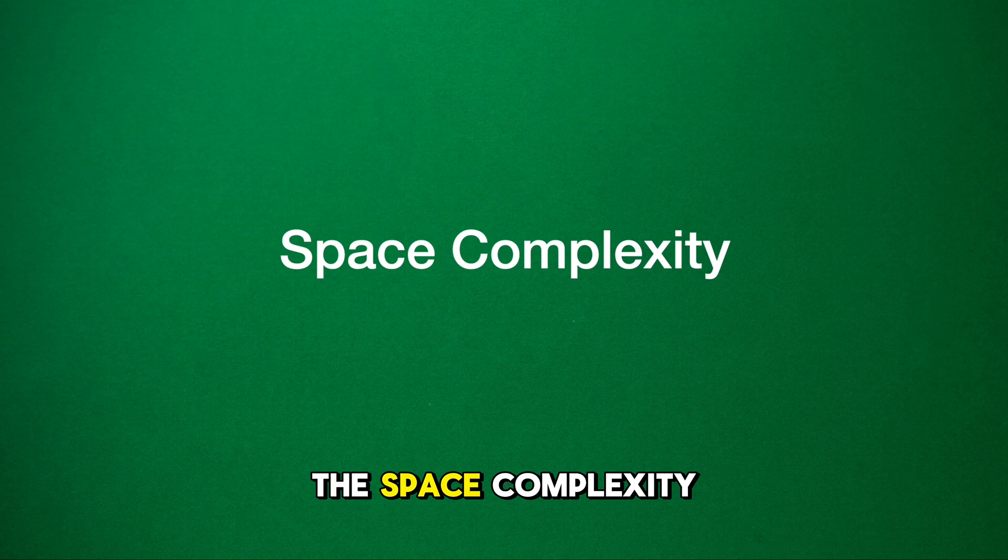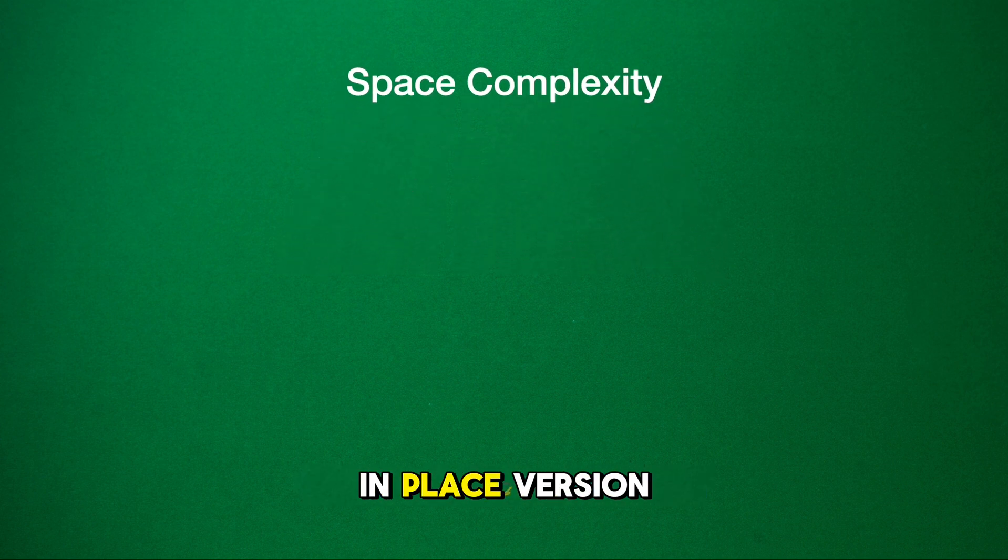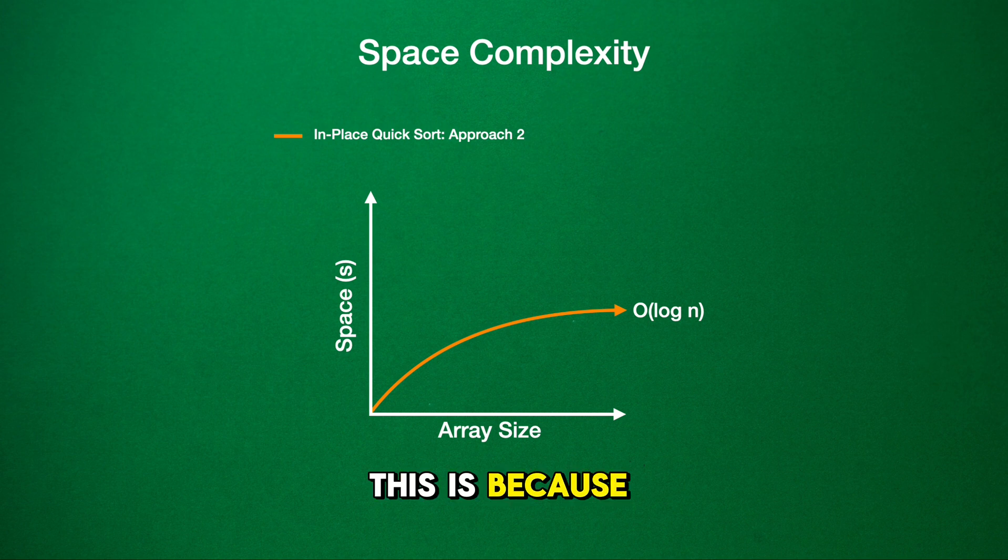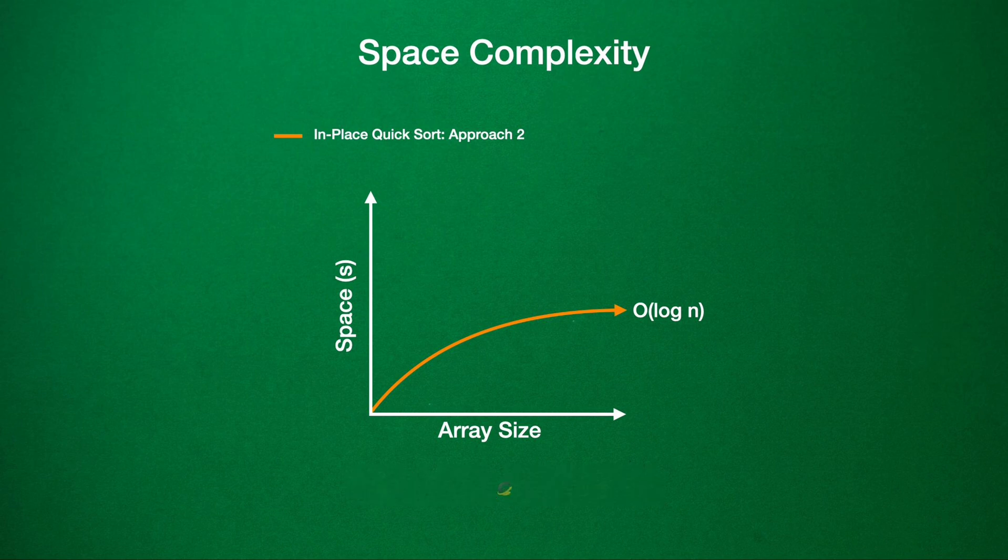In quick sort, the space complexity can vary significantly depending on whether you're using an in-place version or a non-in-place version. The space complexity for the in-place version of quick sort is O(log n). This is because the algorithm sorts the array by recursively partitioning it into smaller sections. The space needed is for the stack frames due to recursion. And since the deepest level of recursion is proportional to the number of times we can halve the array, it results in a logarithmic space requirement.